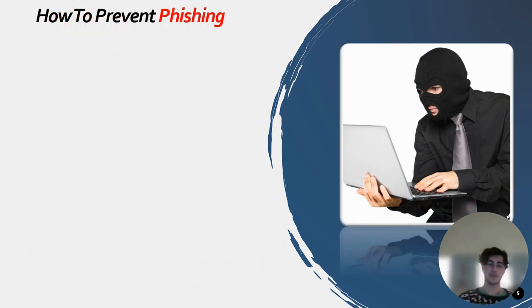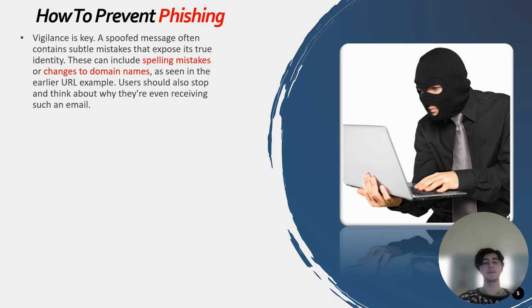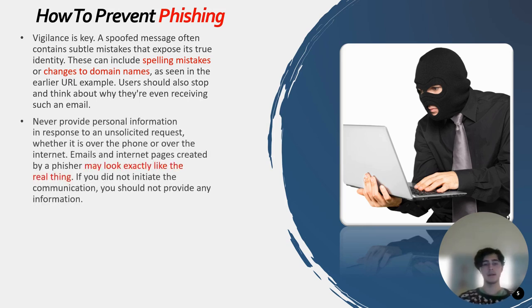How to prevent phishing. Vigilance is key. A spoof message often contains subtle mistakes that expose its true identity, including spelling mistakes or changes to domain names, as seen in the earlier URL example. Users should also stop and think about why they are even receiving such an email. Never provide personal information in response to an unsolicited request — whether over the phone or over the internet. Emails and web pages created by phishers may look exactly like the real thing. If you did not initiate the communication, you should not provide any information.